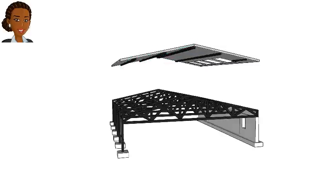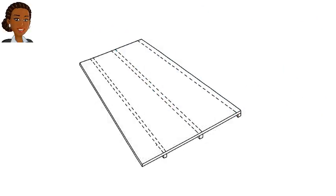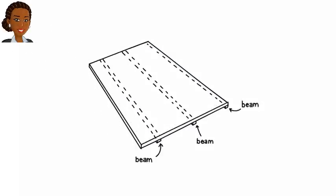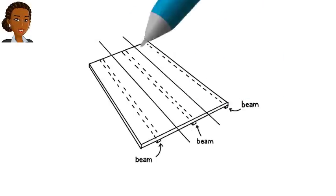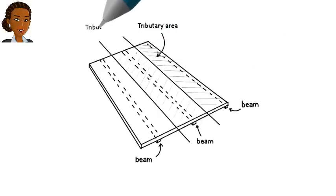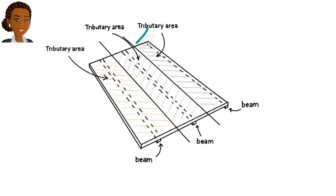Each beam is going to support a part of the roof's weight. But how do we exactly distribute the weight among the beams? To figure this out, we start by drawing parallel lines dividing the distance between each pair of consecutive beams in half, like this. This way, we subdivide the roof panel into three areas. We call these tributary areas for the beams. That is, the weight of the roof associated with this area is going to be supported by this beam. The weight here is going to be supported by this beam. And this beam supports the weight of this area.